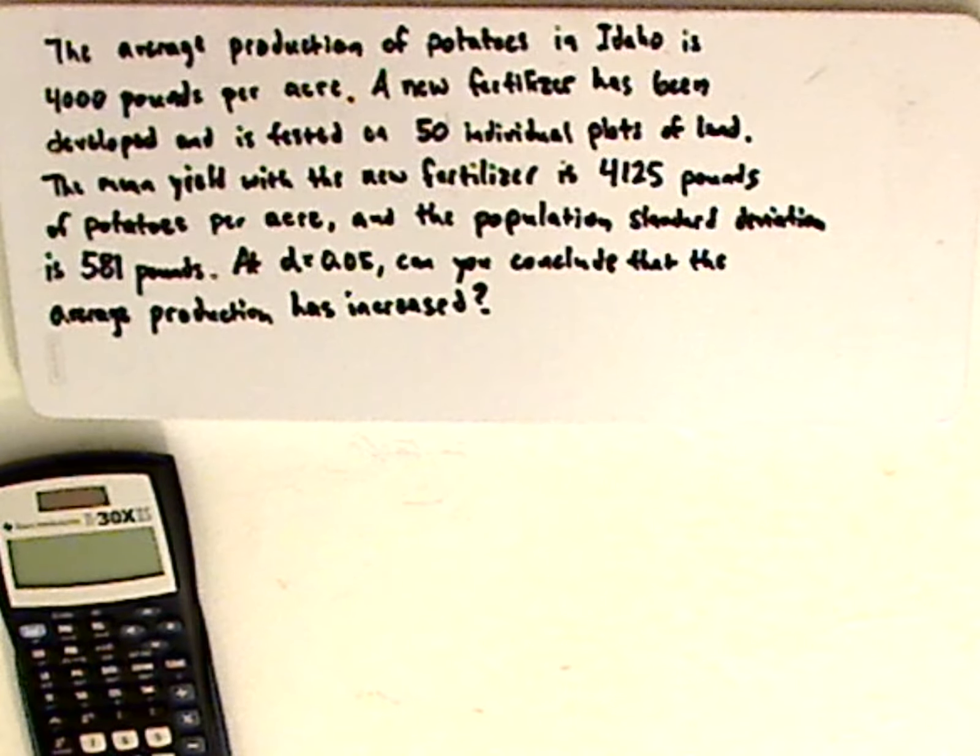The average production of potatoes in Idaho is 4,000 pounds per acre. A new fertilizer has been developed and is tested on 50 individual plots of land. The mean yield with the new fertilizer is 4,125 pounds of potatoes per acre.